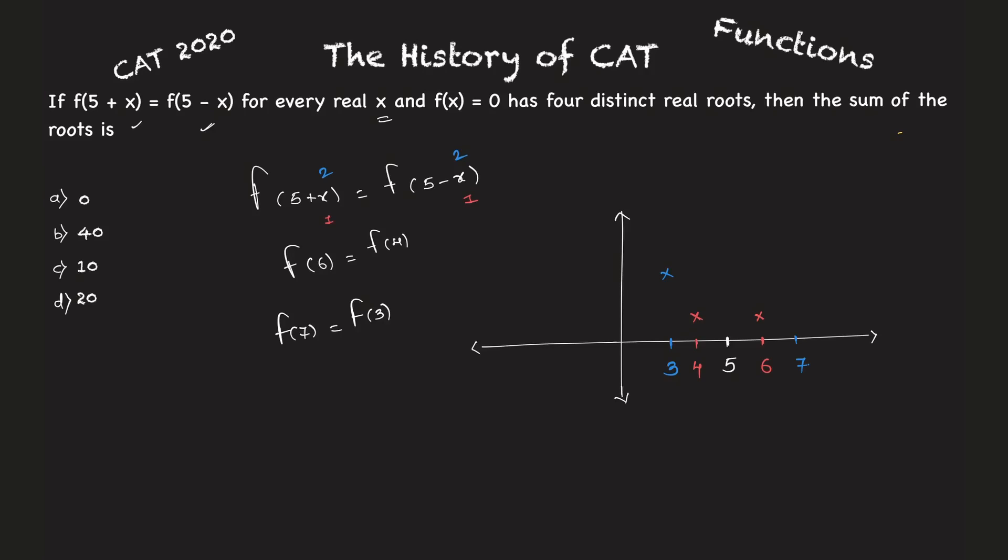So I can see some graph that is being made which is symmetric around the point five. That's what I can see there. But what will I do with this? I need to find out four roots here.